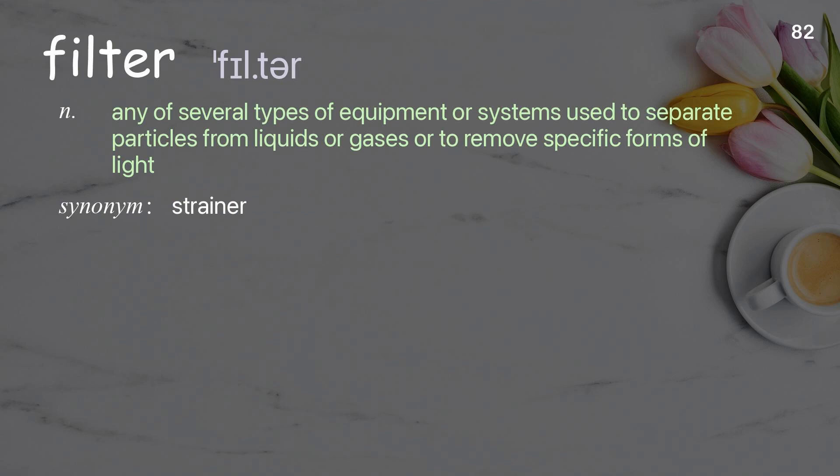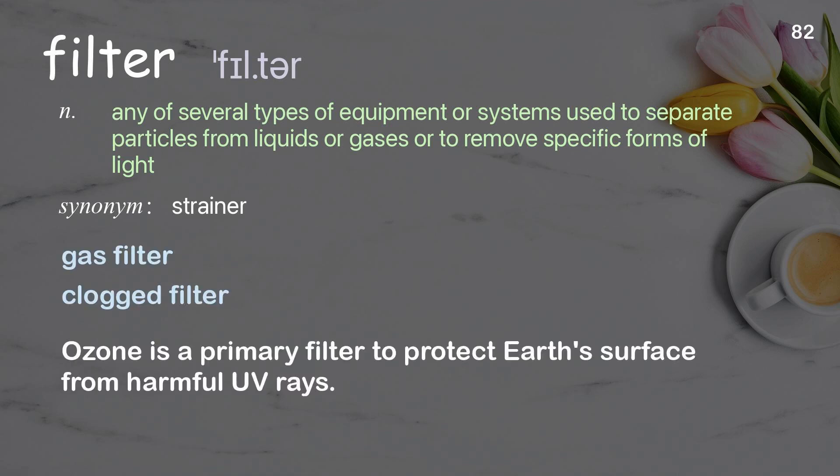Filter: any of several types of equipment or systems used to separate particles from liquids or gases, or to remove specific forms of light. Examples: gas filter; clogged filter. Ozone is a primary filter to protect Earth's surface from harmful UV rays.